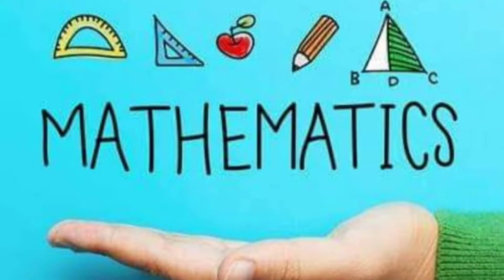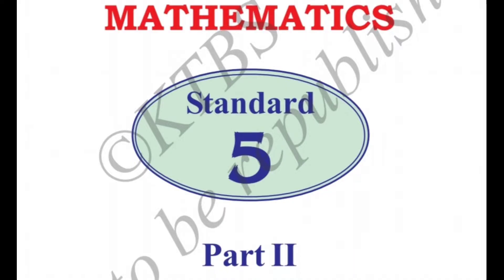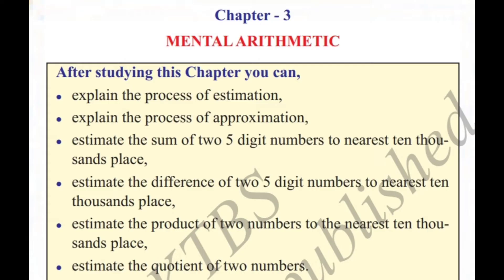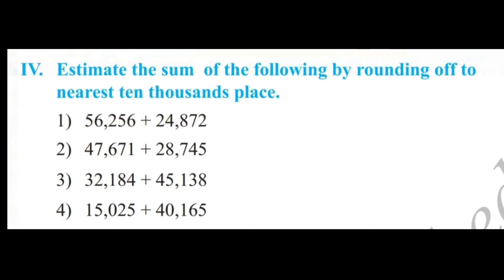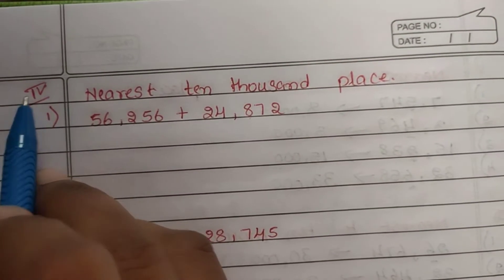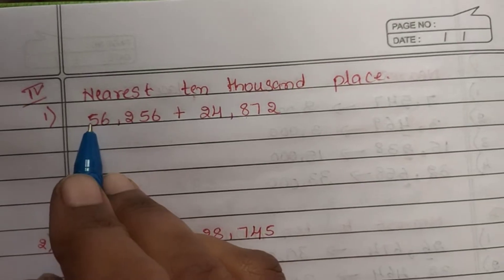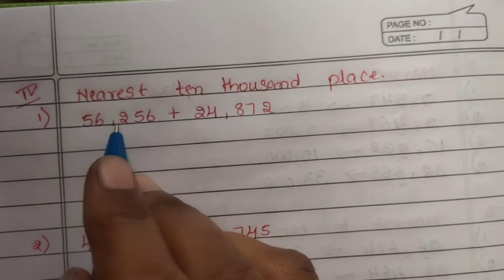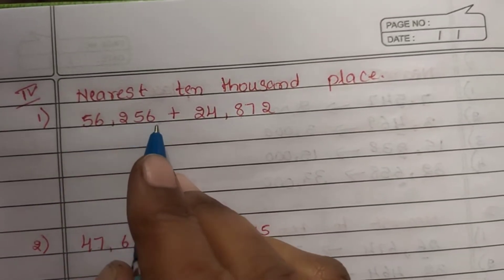Hello everyone, welcome to Maths Class, Fifth Standard Part Two. Let's continue with the lesson: Mental Arithmetic. Fourth main: estimate the sum of the following by rounding off to nearest ten thousand place. Fourth main, first question: 56,256 plus 24,874.